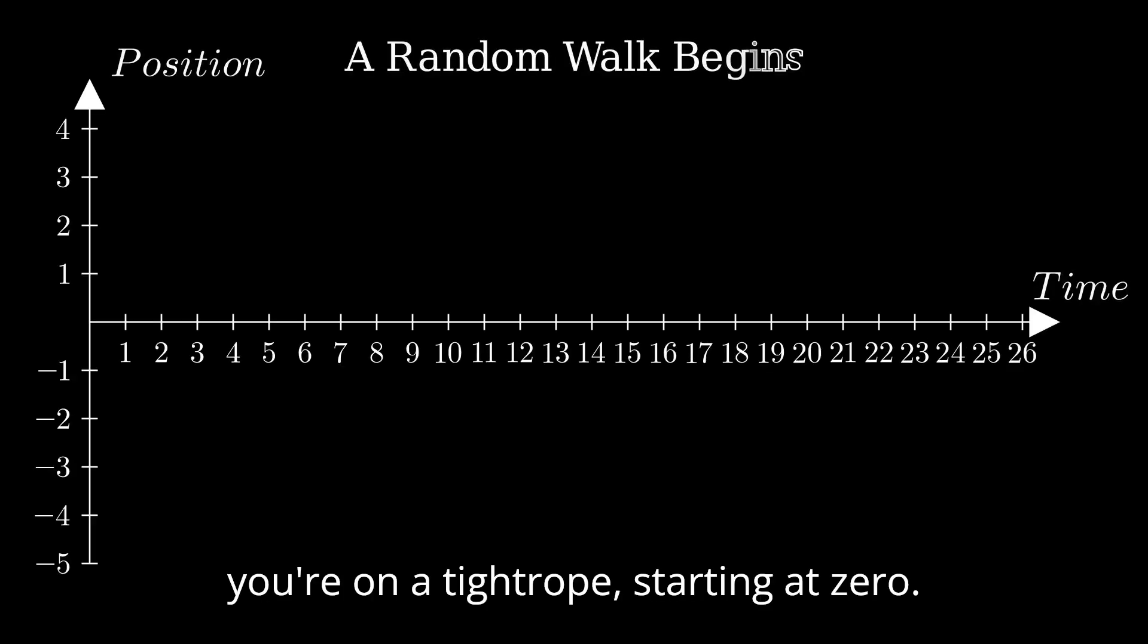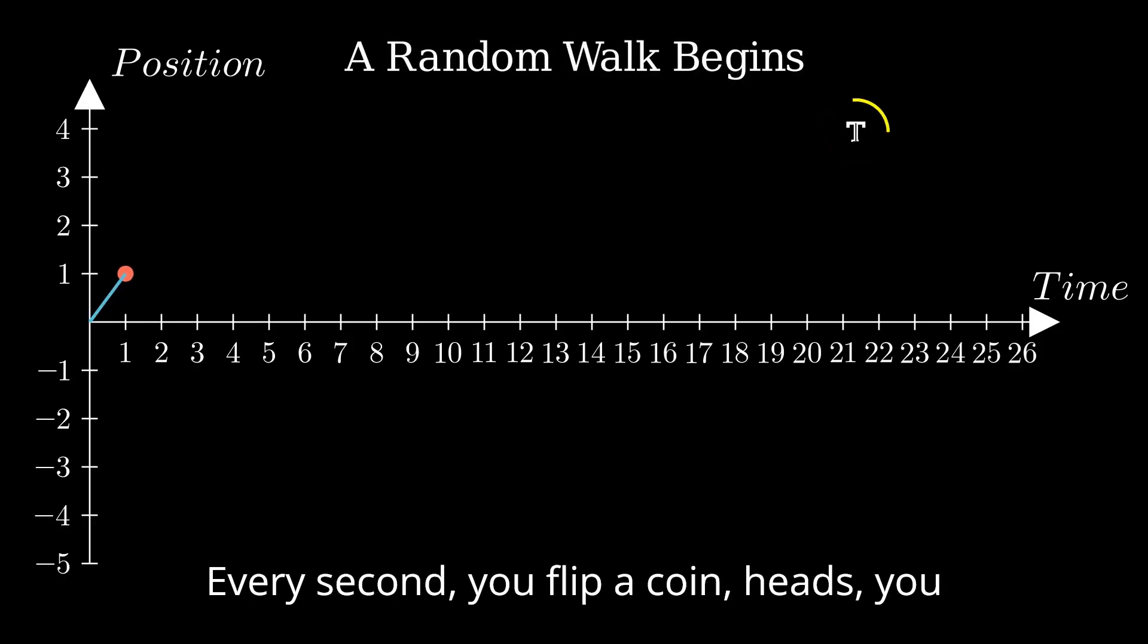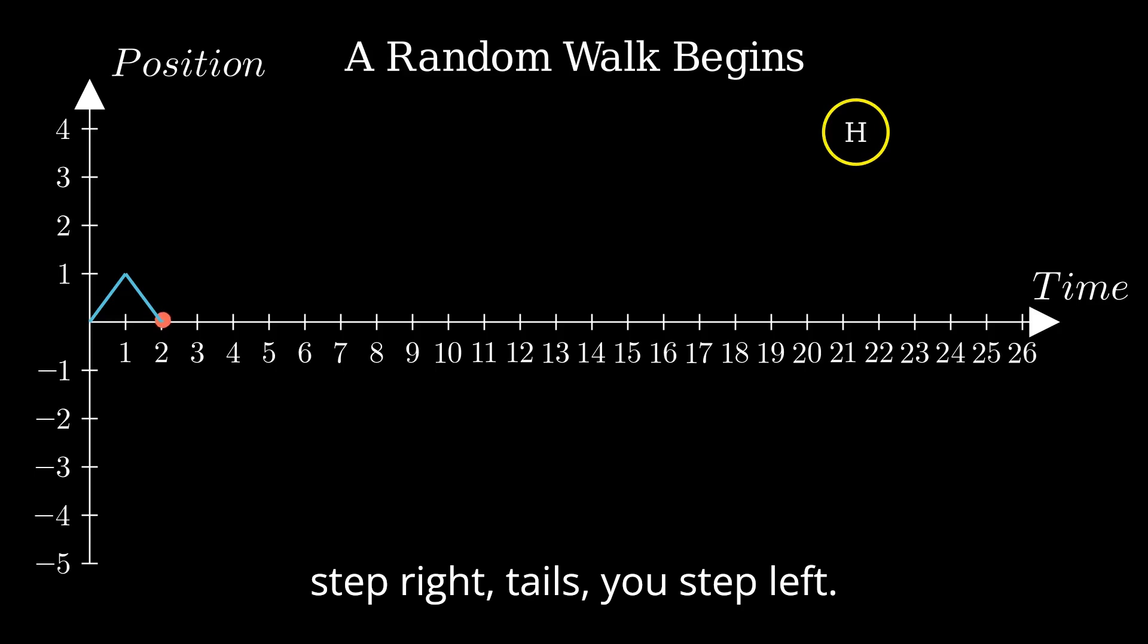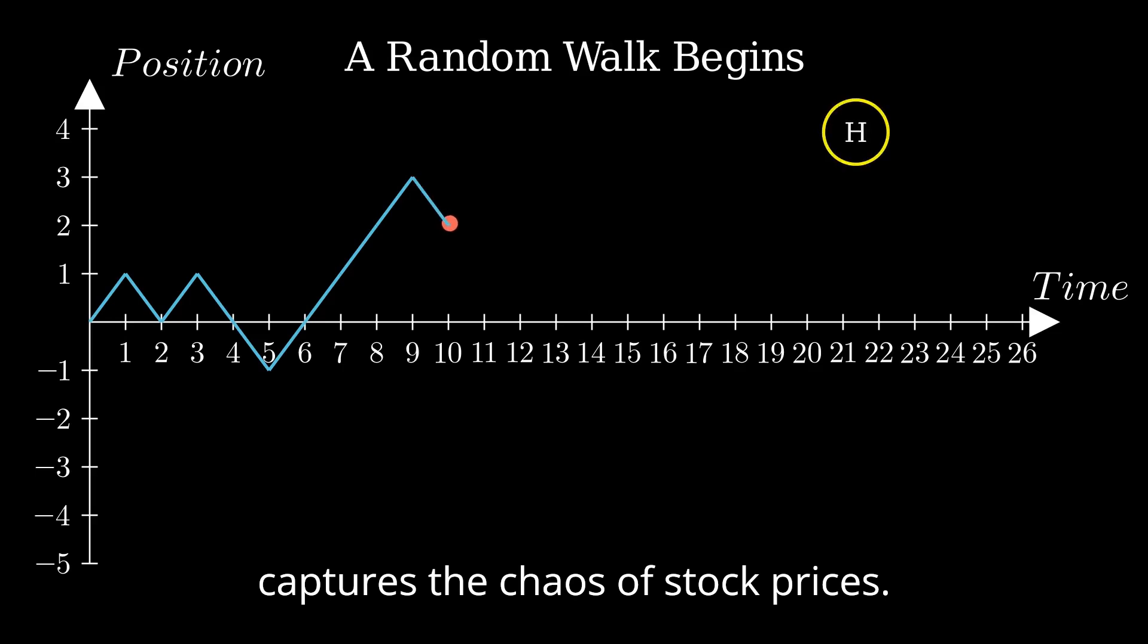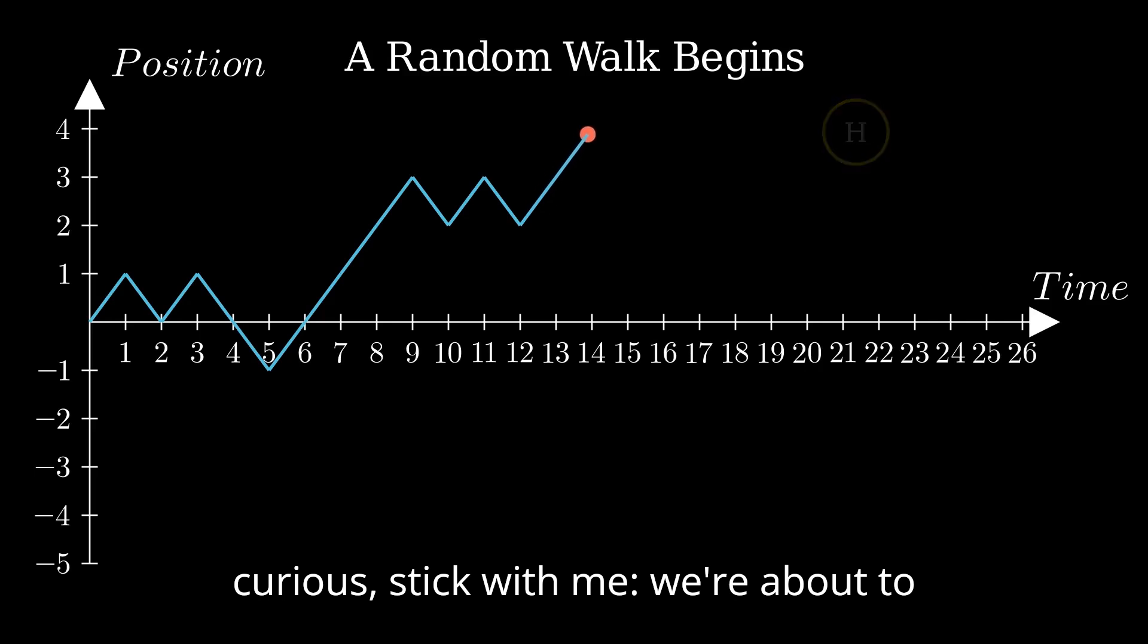Picture this: you're on a tightrope, starting at zero. Every second, you flip a coin. Heads, you step right; tails, you step left. This unpredictable journey is a random walk, a cornerstone of stochastic calculus. It's simple, yet it captures the chaos of stock prices. Whether you're a math whiz or just curious, stick with me. We're about to see how randomness shapes finance.